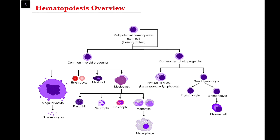So let's take a look at how these cells are formed in this video. Beginning from the stem cell, which is also known as the multipotential hematopoietic stem cell or hematocytoblast, the two cell series that arise from this cell are called the myeloid and the lymphoid series. Now each of these series has its own progenitor cell called the common myeloid progenitor and the common lymphoid progenitor.